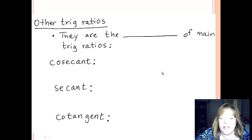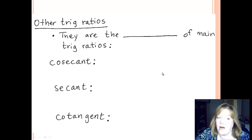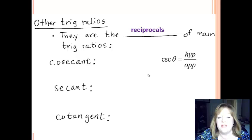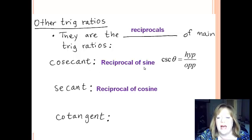The other trig ratios, and I can think of no better time to introduce them than now, are the reciprocals of the main trig ratios. You know how fractions, you get the reciprocals. Cosecant is the reciprocal of sine. So instead of being opposite over hypotenuse, it's hypotenuse over opposite. It's abbreviated CSC.